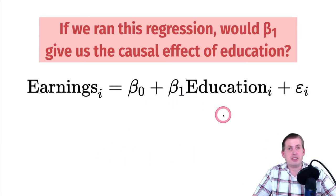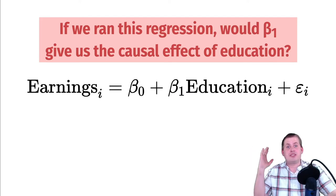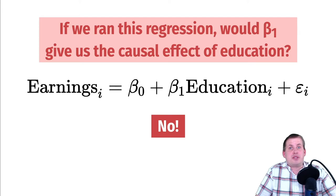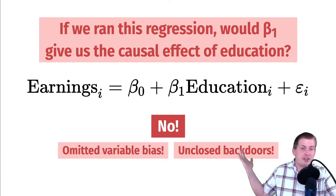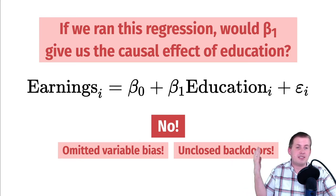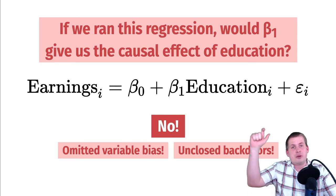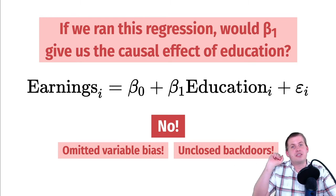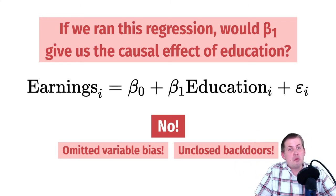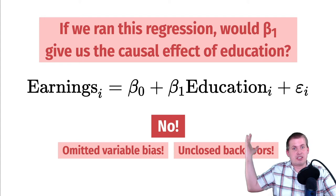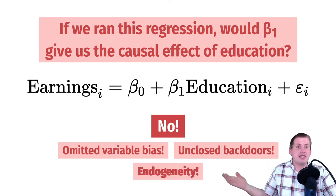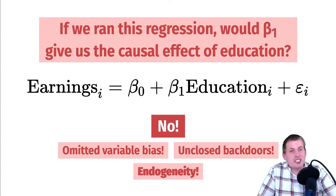Would this beta-1 be the causal effect? Hopefully by now you know the answer is absolutely not. You can't do that because correlation is not causation. We haven't adjusted for anything — there are confounding factors, omitted variable bias. We now call these unclosed back doors, where there are open pathways between education and earnings that we need to adjust for. Another name for why we can't just say education causes earnings is endogeneity — there is endogeneity in this relationship.